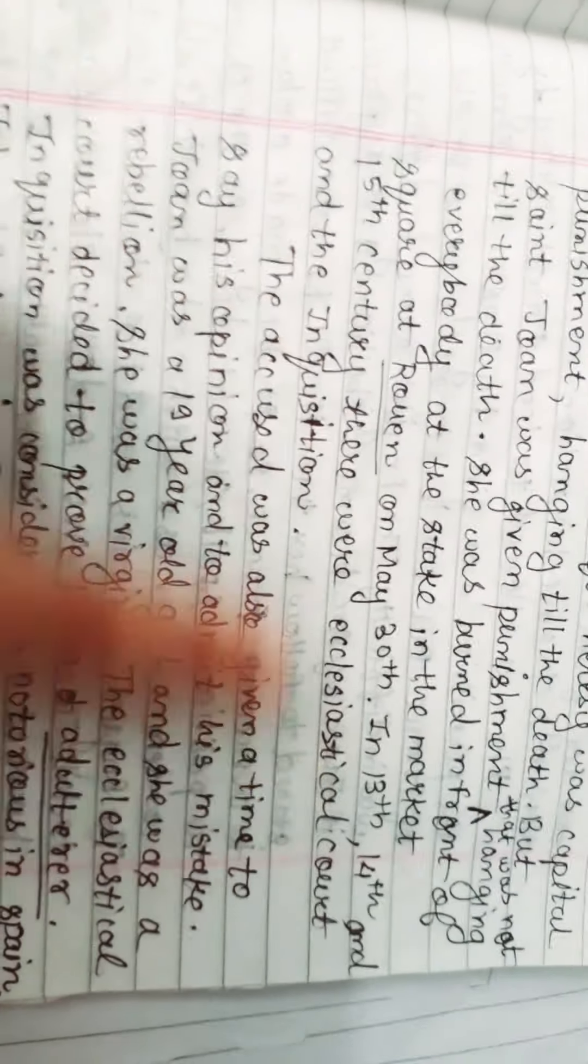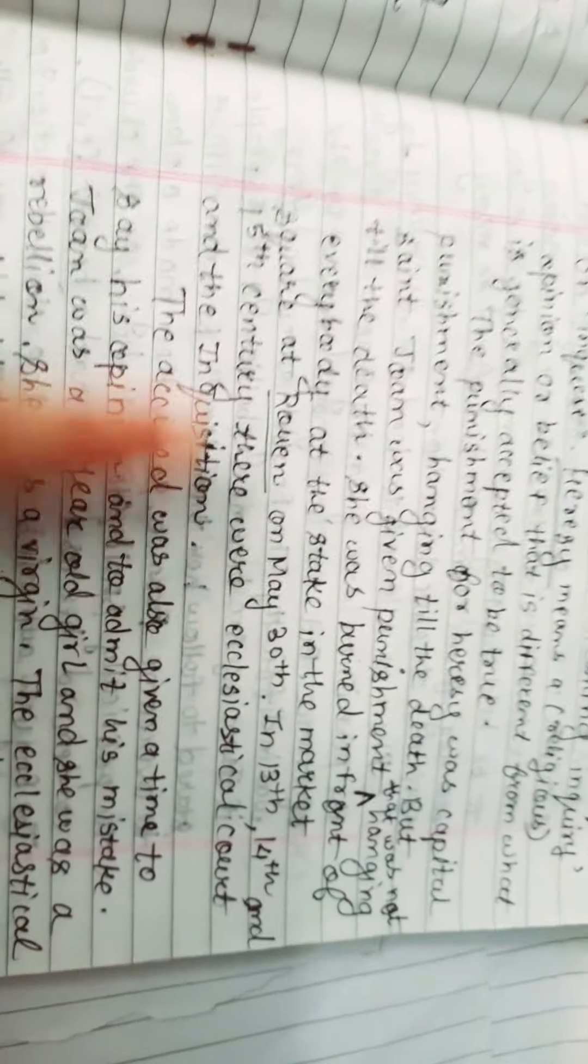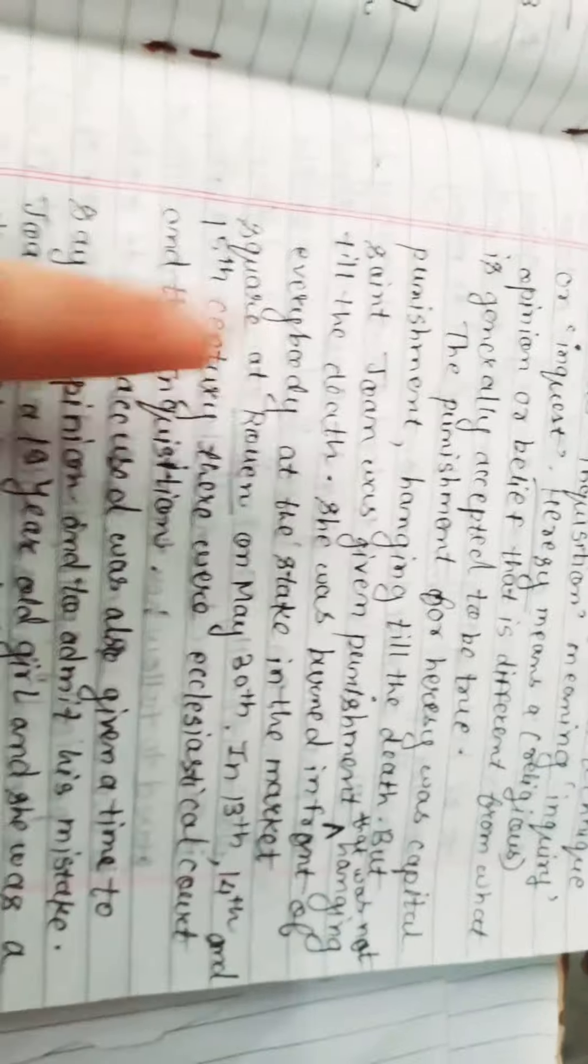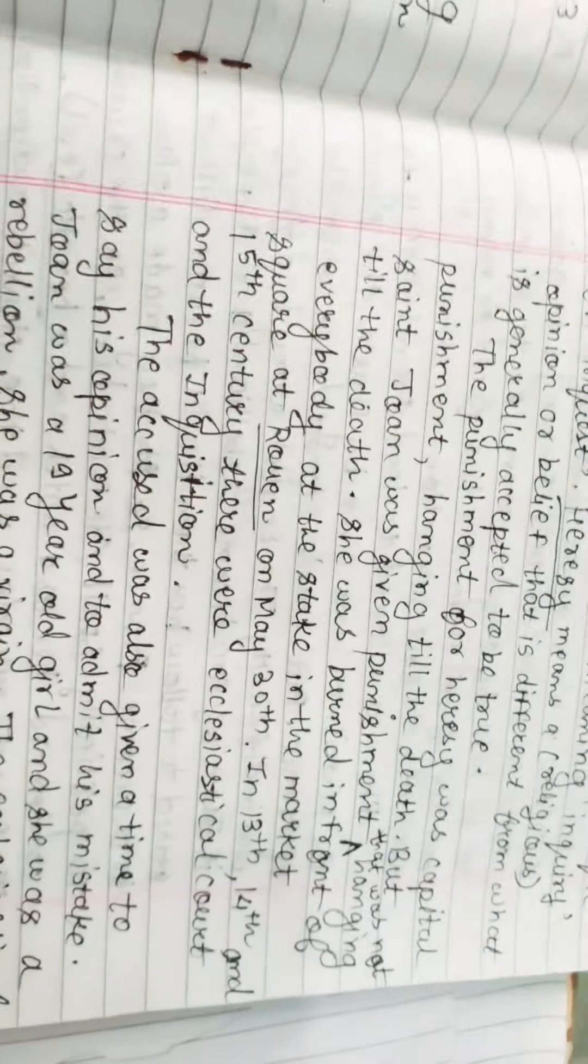In 13th, 14th and 15th century, there were ecclesiastical courts and the inquisition. Inquisition means enquiry. So Saint John was given the punishment burning till death.